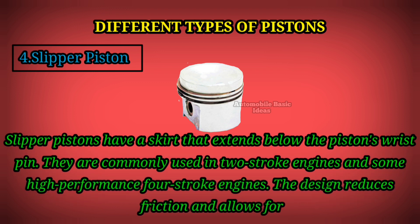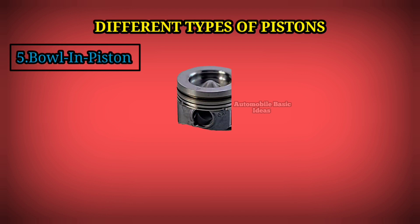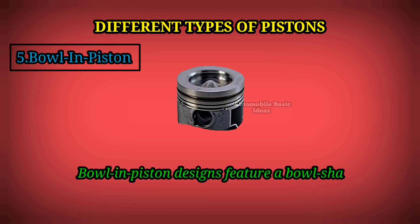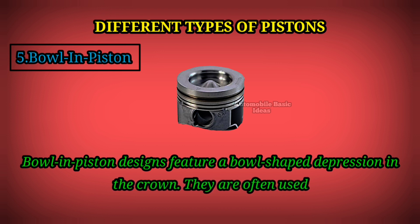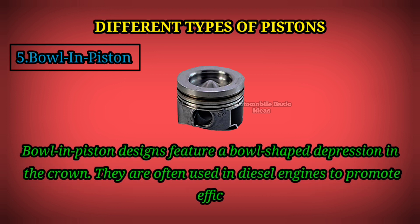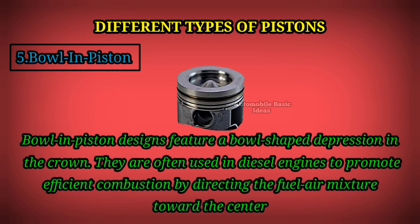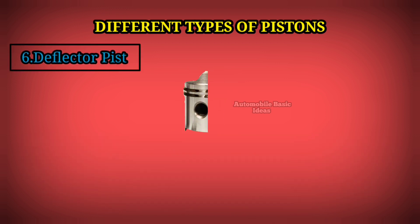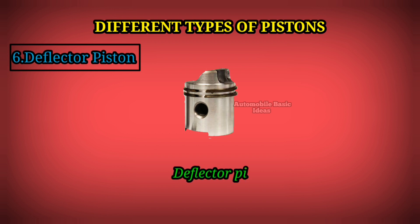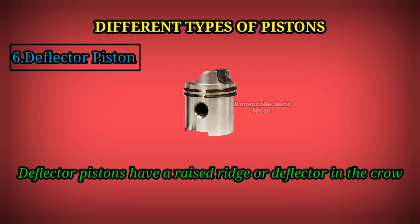Slipper piston: The design reduces friction and allows for lighter pistons. Bowl-in piston: Bowl-in piston designs feature a bowl-shaped depression in the crown. They are often used in diesel engines to promote efficient combustion by directing the fuel-air mixture toward the center of the cylinder.